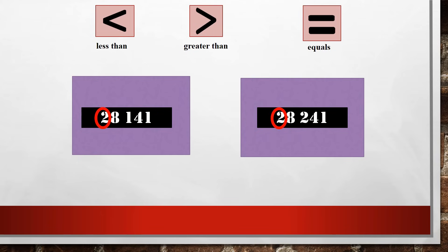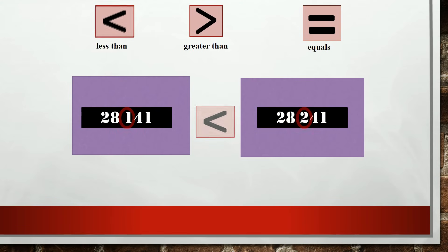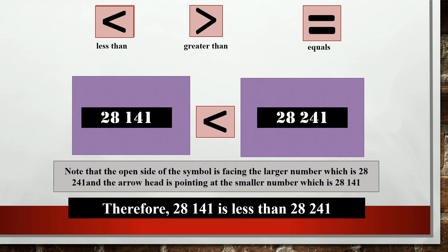The ten thousands digit is both two, so they are equal. The thousands digit is eight — they are again equal. The hundreds digits are one and two. Two is bigger than one. Therefore, 28,241 is bigger than 28,141. Note that the open side of the symbol faces the larger number, 28,241, and the arrowhead points at the smaller number, 28,141.